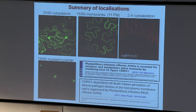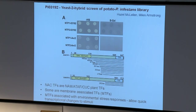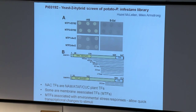I'm going to give you one story about an effector and its target — one of the membrane-associated effectors. This one's PI03192, named for its location within the genome. In yeast two-hybrid, 03192 interacted with two related potato proteins. Another RxLR, AVR2, doesn't interact with either of these. These proteins have an N-terminal NAC DNA-binding domain — they're NAC transcription factors, a plant-specific class. We've called them NTP1 for NAC Targeted by Phytophthora 1, and NTP2.